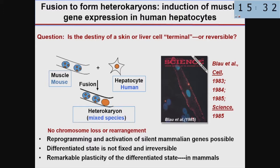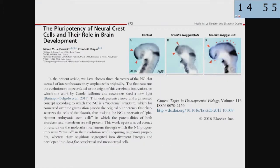In this environment there was no loss of chromosomes, no loss of genetic material. What we showed was that the liver cell could be induced to express muscle genes that it normally never would. We showed that for a number of different human differentiated cell types, and we could determine it was the human genes because they were distinct from mouse. This showed that reprogramming could activate silent genes in mammalian cells and that the differentiated state was not fixed and irreversible — there was remarkable plasticity in differentiated mammalian cells.